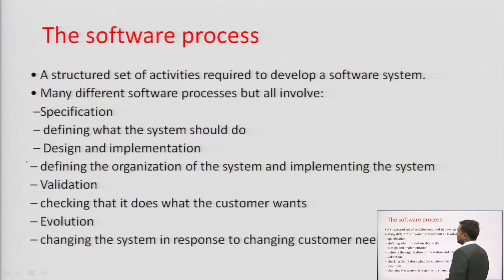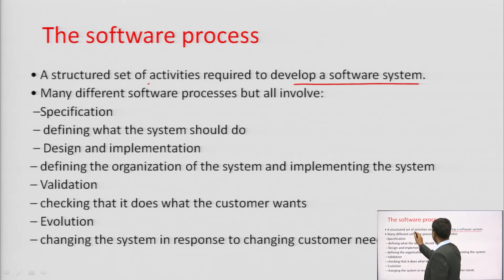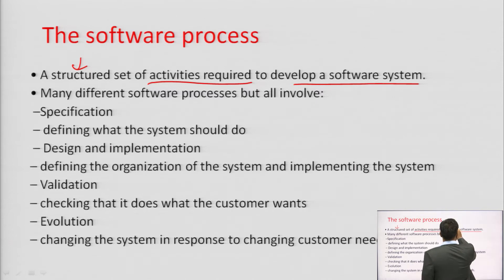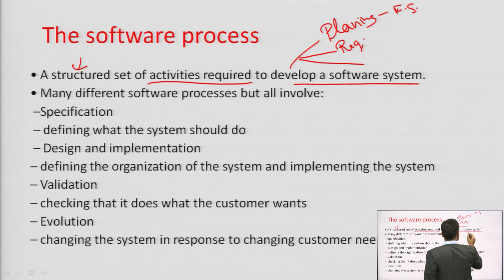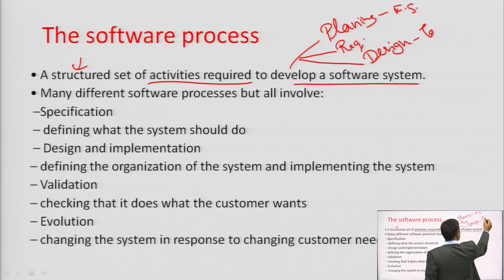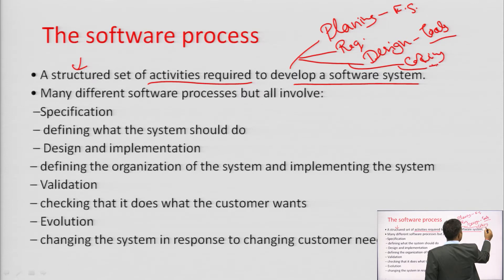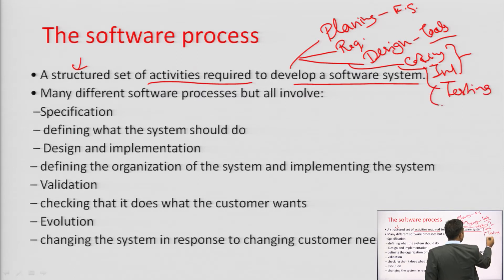A software process is a structured set of activities required to develop software systems. These structured activities include: planning, feasibility study, requirement gathering, designing methods, tools used, coding, implementation, testing, and maintenance.